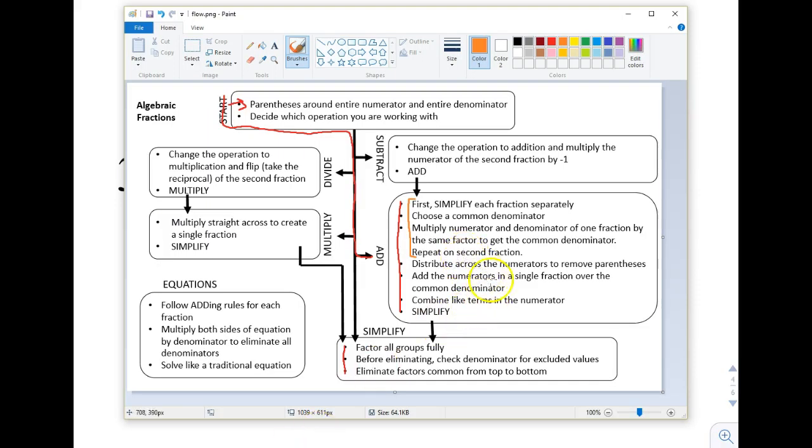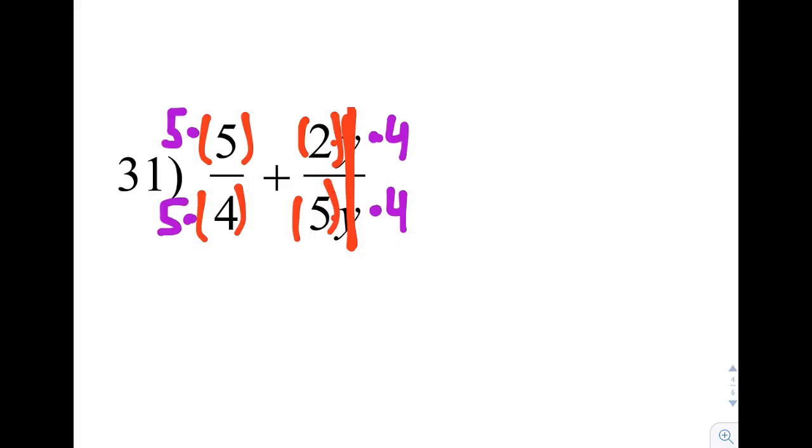We are now going to distribute across the numerators to remove the parentheses. So distributing in this case is just a single thing times a single thing, so it's just straight multiplication. 5 times 5 is 25. 2 times 4 is 8. So we have replaced those. Our denominator is 4 times 5. We could leave that in factored form. Since they're just nice clean numbers, we can actually multiply them out and just get 20. If you had something that looks more like an algebraic type problem, it would be totally fine for you to leave the denominator staying factored all the way through.